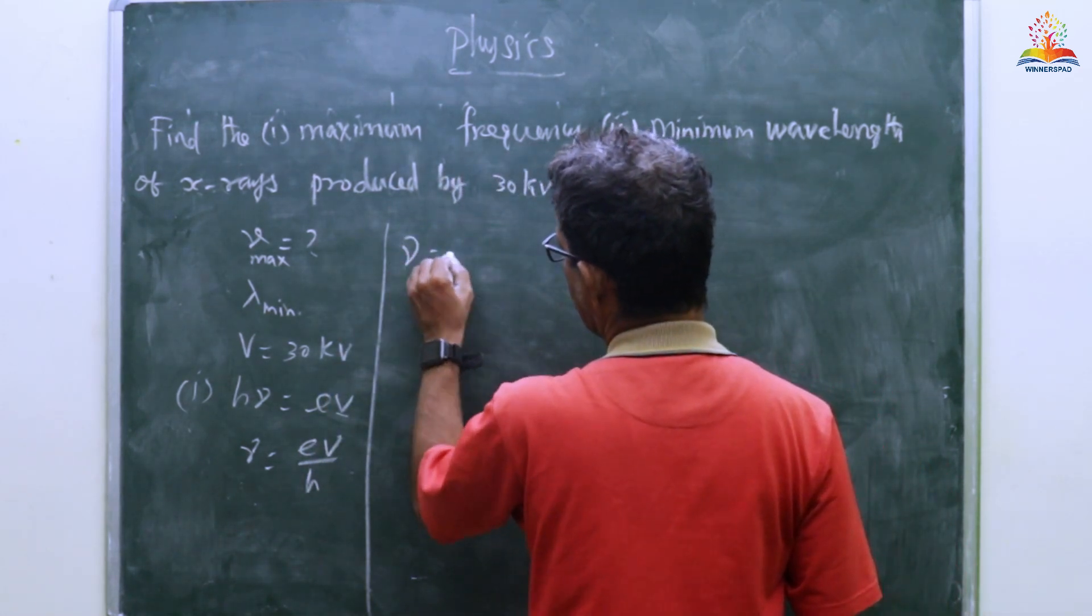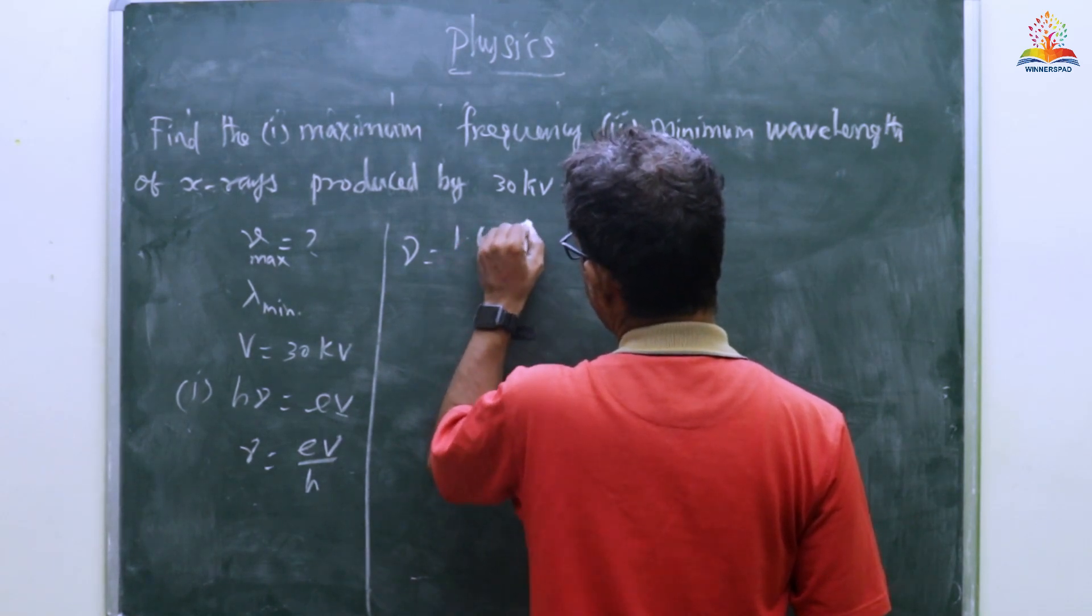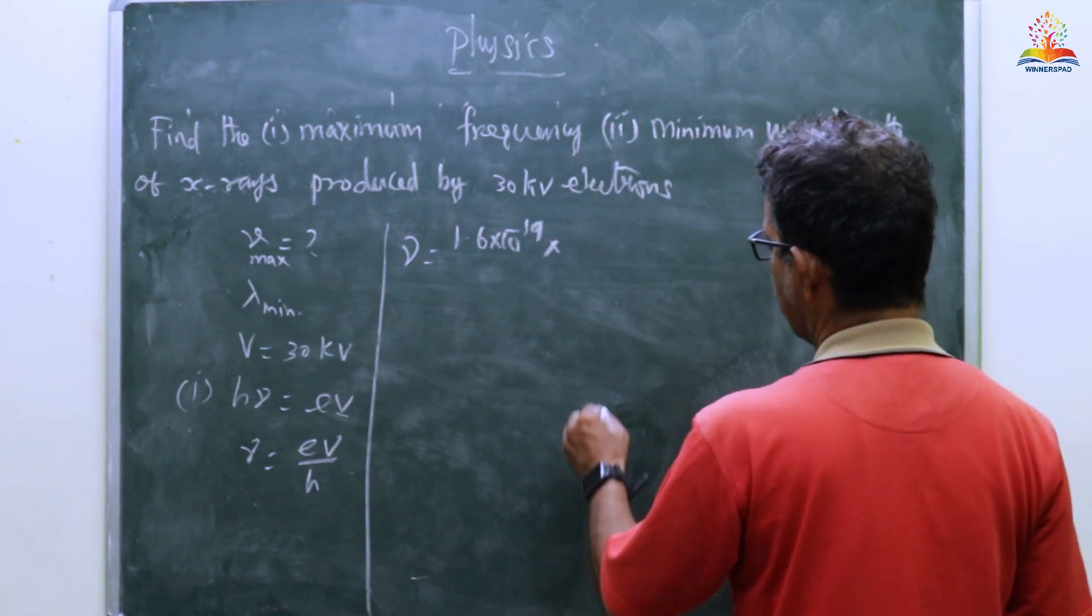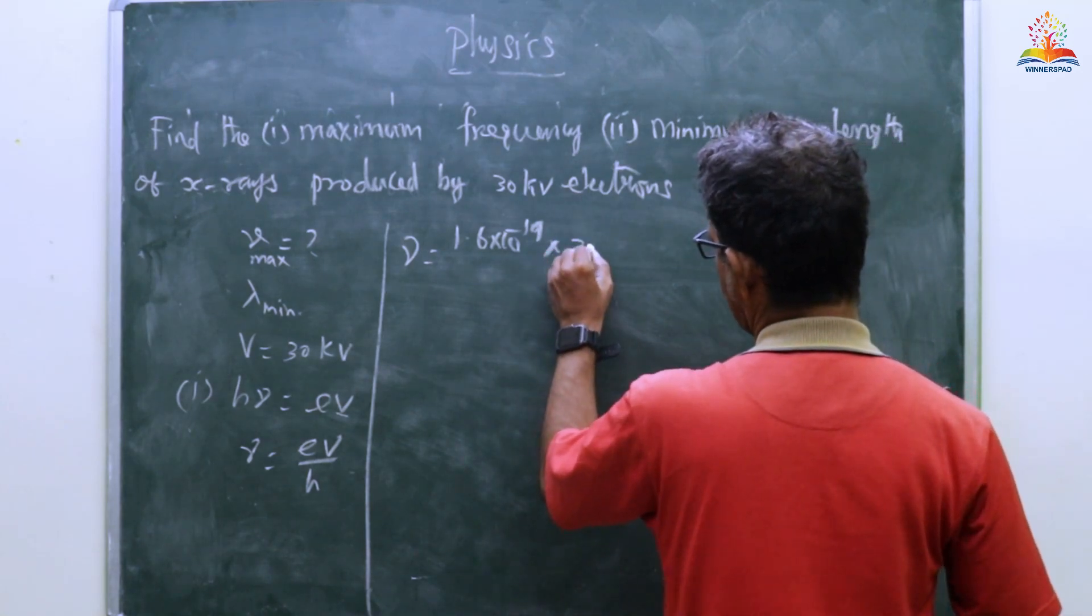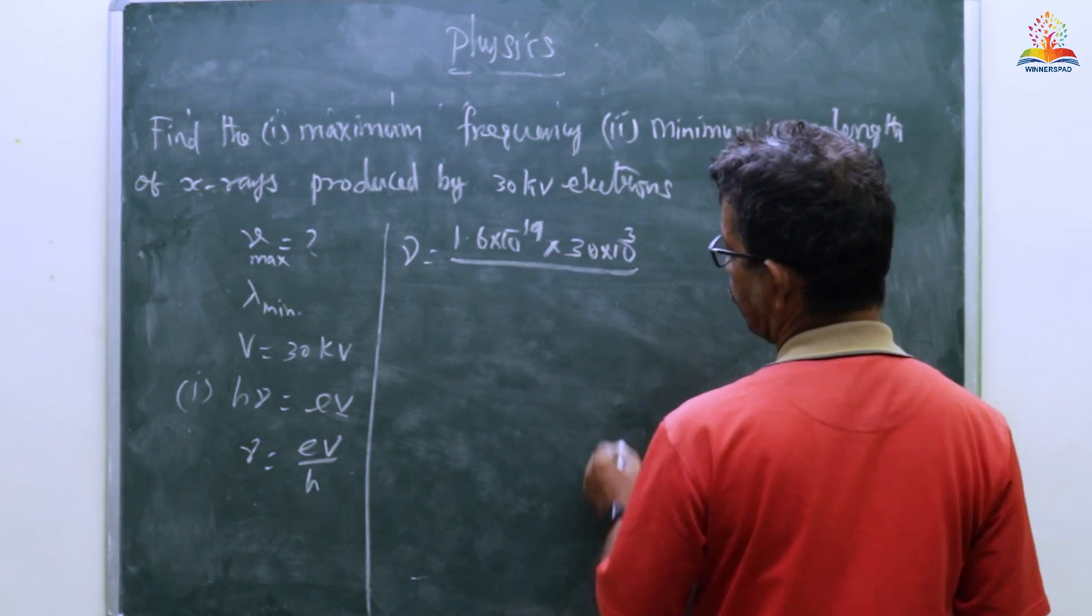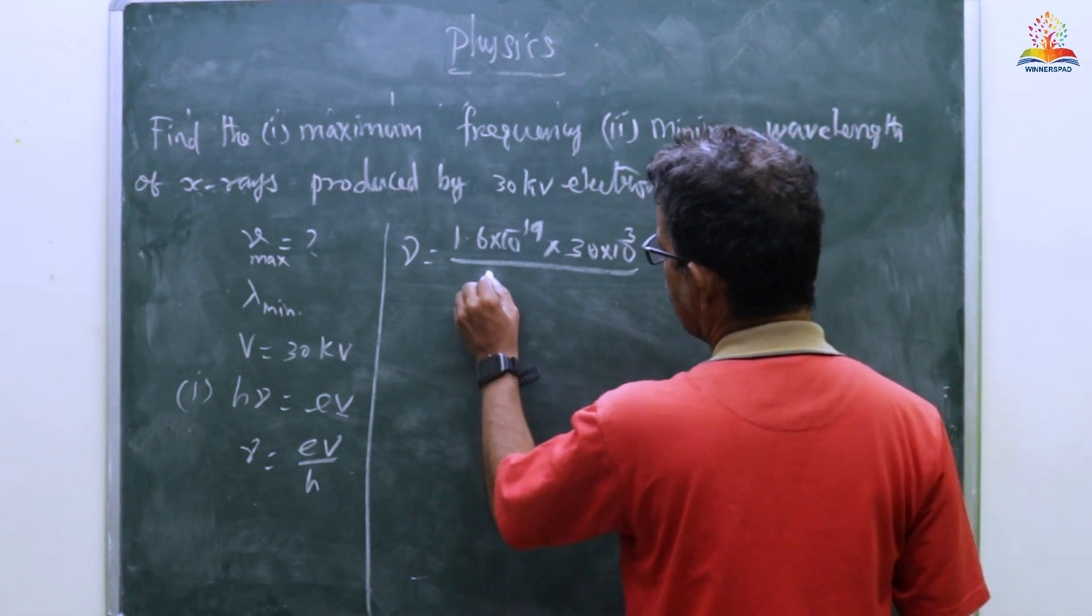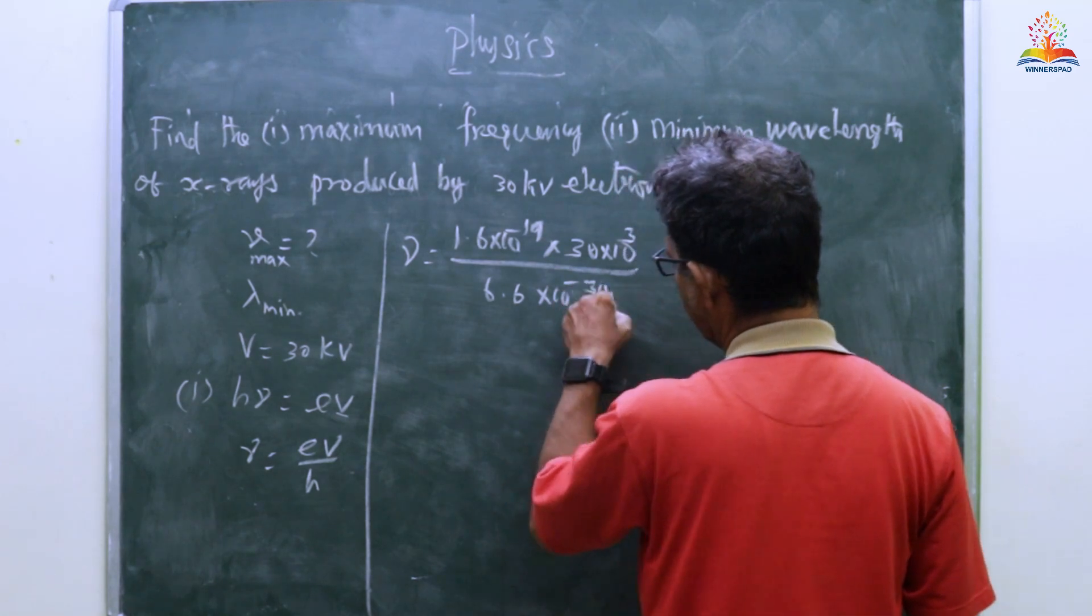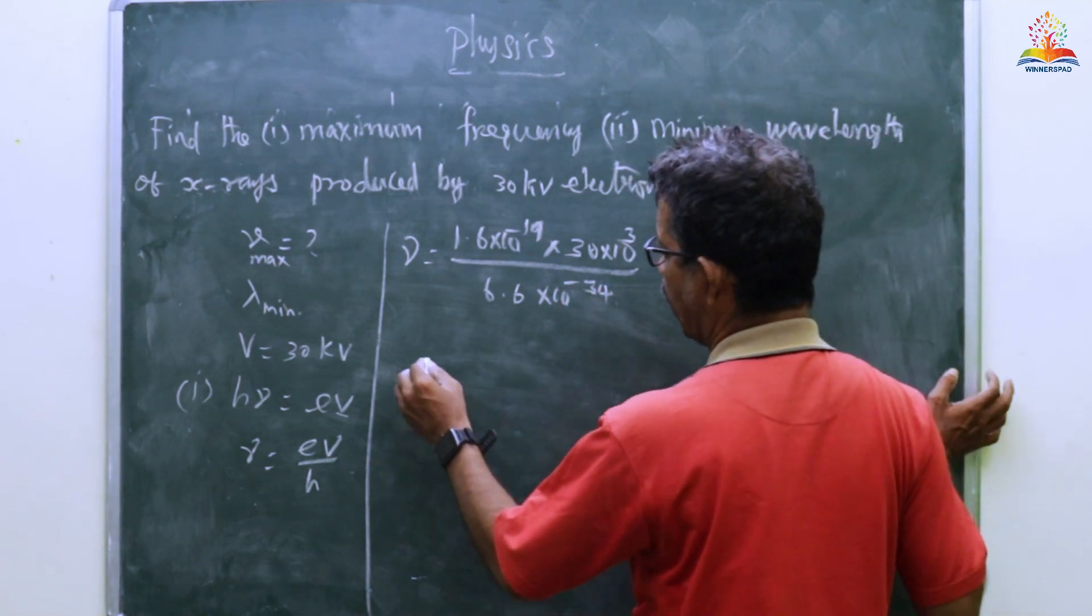ν equals e times 1.6 times 10 to the minus 19. The voltage is 30 kilovolts, 30 times 10 to the 3, divided by h, which is 6.6 times 10 to the minus 34.